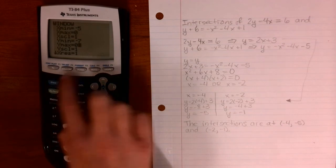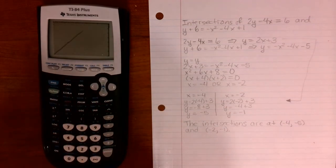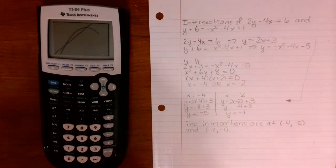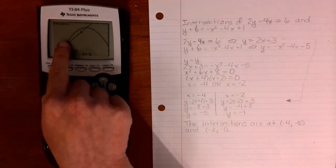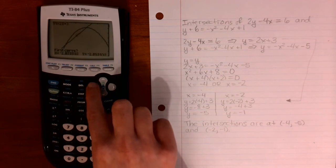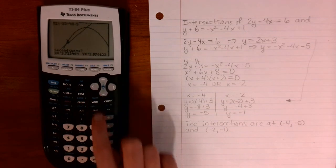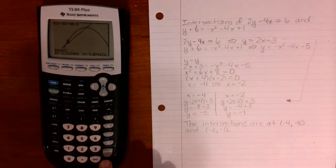And now again, let's go to second calc and press intersect. Now which is the first intersection that we want to find? Well, let's at first find this intersection here. So let's go close to that intersection on the first function. And let's go close to that intersection on the second function. And then let's press enter again for guess.